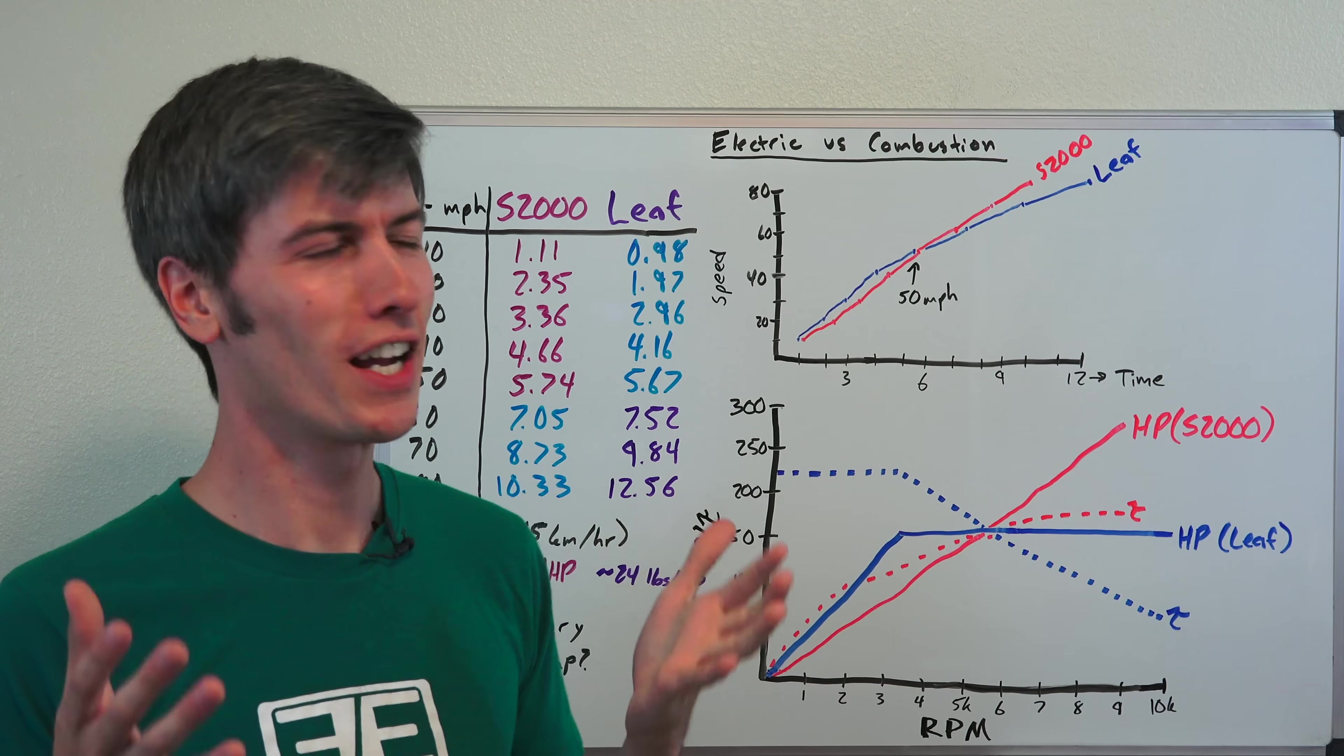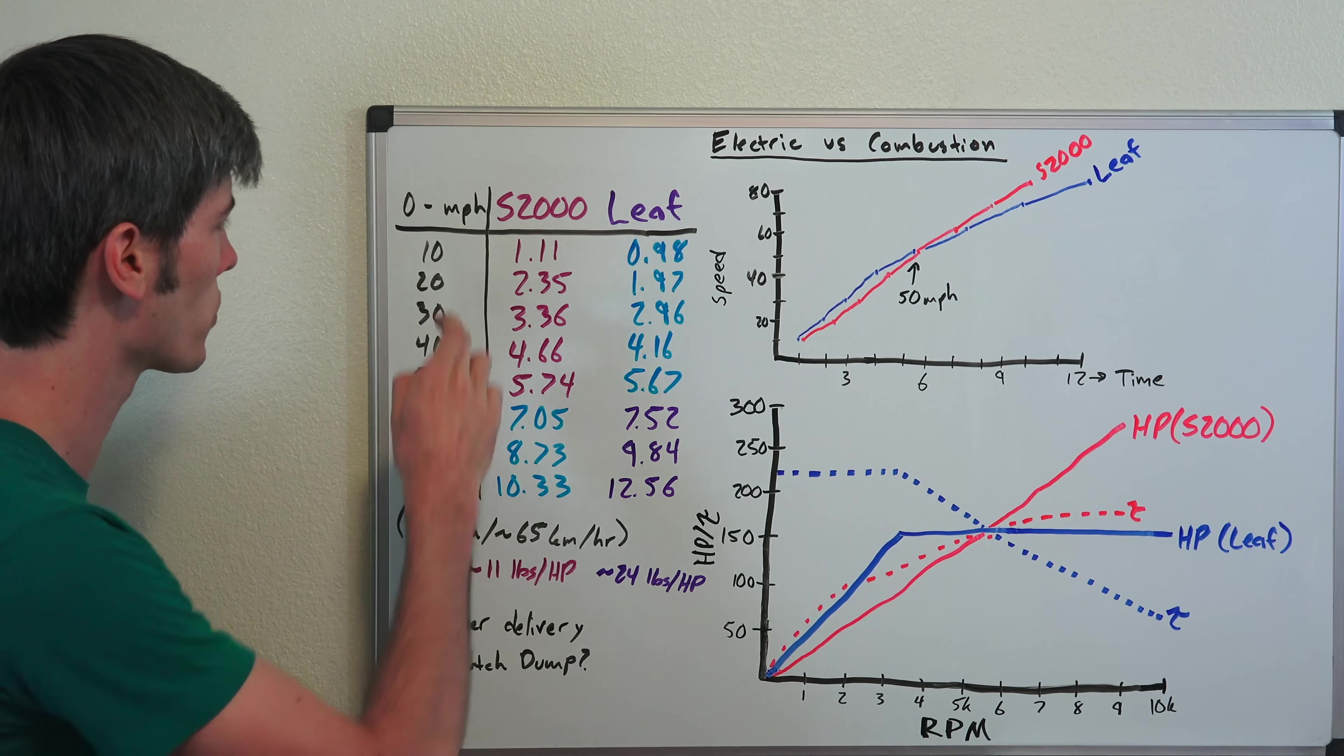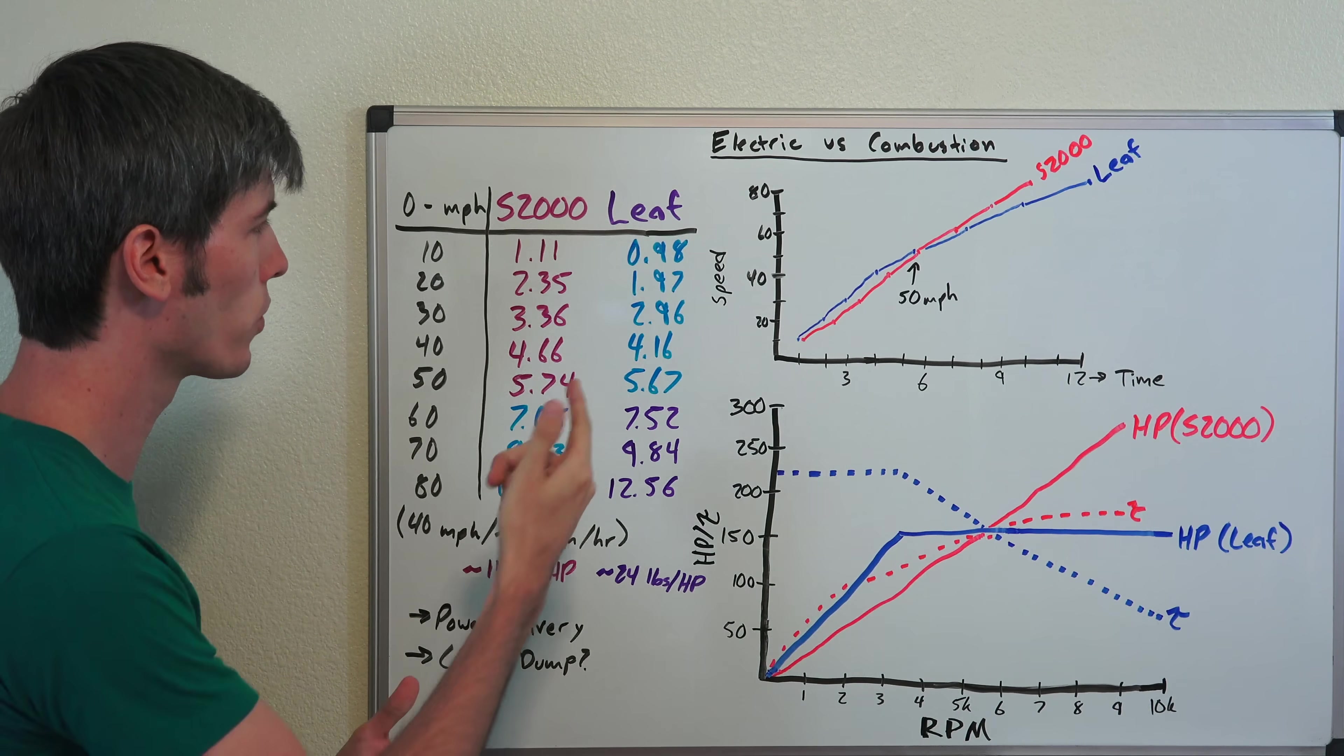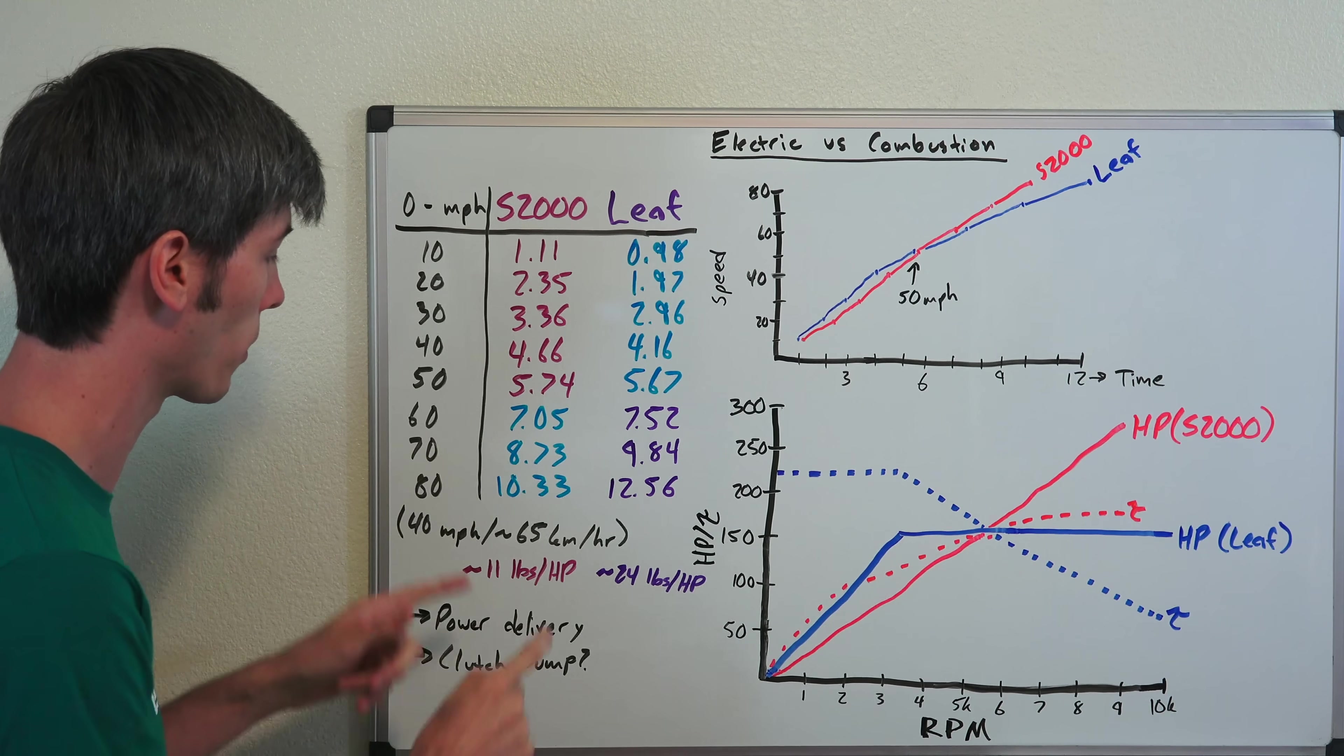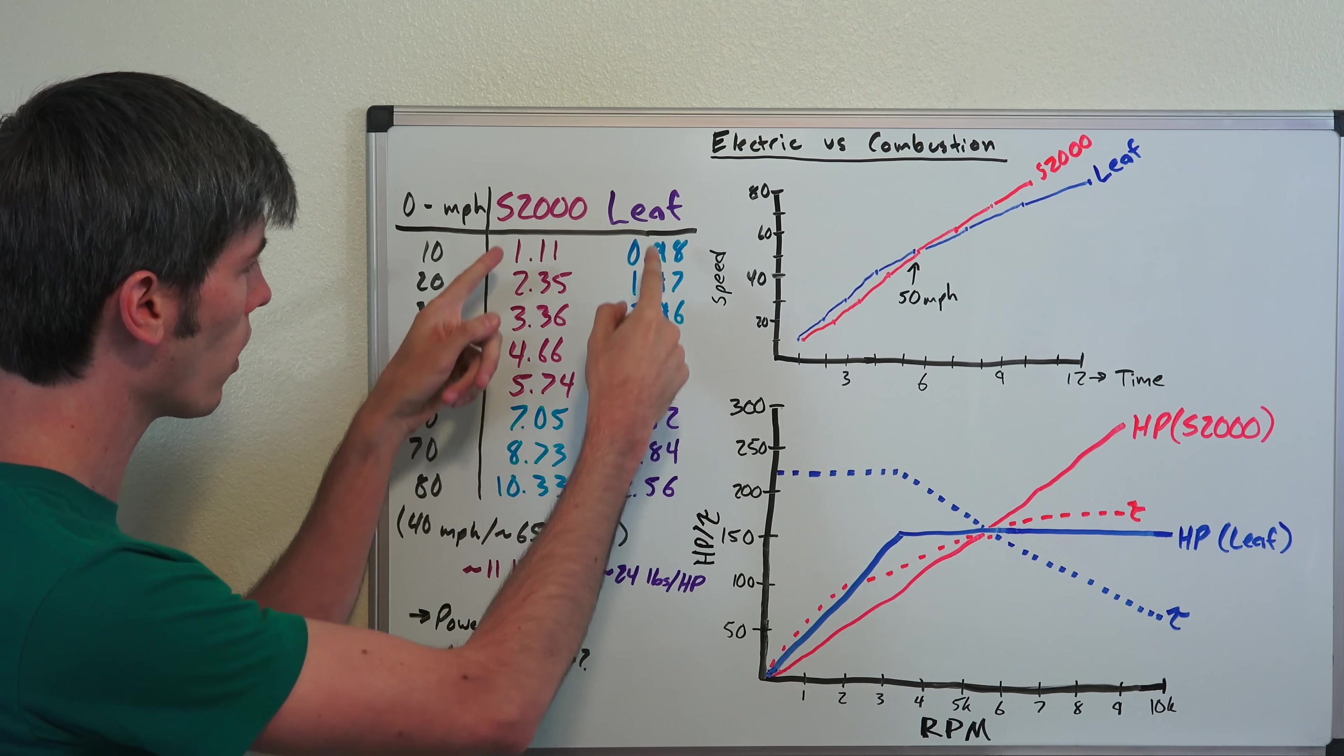Okay so these results are not entirely intuitive. The S2000 perhaps a bit disappointingly slow, but I think even more so the Nissan Leaf is surprisingly quick. Looking at the incrementals here, 10, 20, 30, 40 through 80 miles per hour, the Nissan Leaf is quicker to 10, 20, 30, 40, and 50 miles per hour. The S2000 does not overtake it until 60 miles per hour. It's then quicker to 70 and 80, and that gap will continue to get wider past 80 miles per hour.